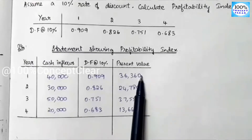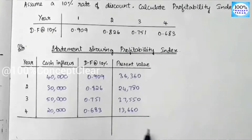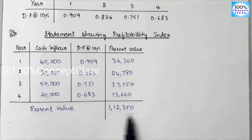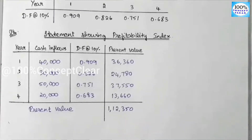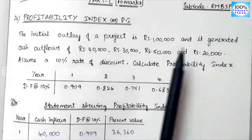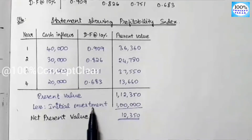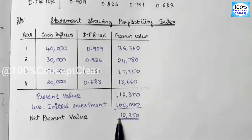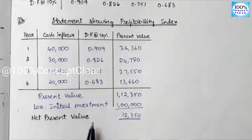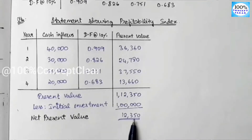We now have present values for all 4 years. Adding all present values together gives us 1,12,350. Next, we subtract the initial investment of 1 lakh: Present Value minus Initial Investment equals Net Present Value. So NPV = 1,12,350 minus 1,00,000 = 12,350.